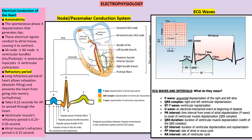In electrophysiology, the SA node is the pacemaker of the heart. The impulse travels to the AV node, then to the bundle of His or Purkinje fibers, and finally to the ventricular myocytes causing ventricular contraction. For ECG waves: the P wave represents atrial depolarization; the PR interval is the length between atrial and ventricular depolarization; QRS complex represents ventricular depolarization; the ST segment corresponds to action potential duration in ventricular muscle; and the T wave represents ventricular repolarization.